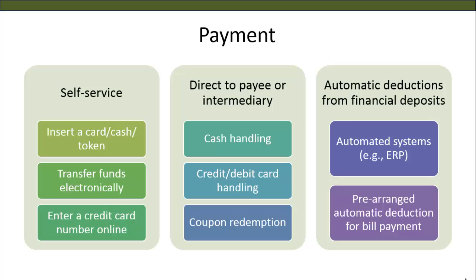A variety of payment options exist, but all customers expect payment to be easy and convenient. Payment can be self-service, such as inserting a card to pay for a haircut. It can be by electronic transfer of funds, like paying bills online, or by entering a credit card number online. Payment can also be made directly to a payee or intermediary with cash, credit, or debit card, or by using coupons to redeem for a service. Payment can be automatic deductions, for example, ERP, parking gantries, or GIRO payment arrangements.